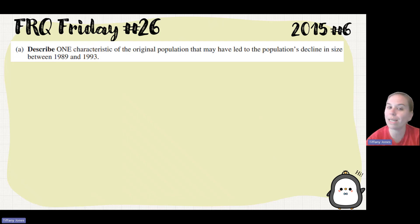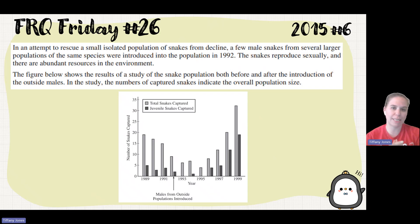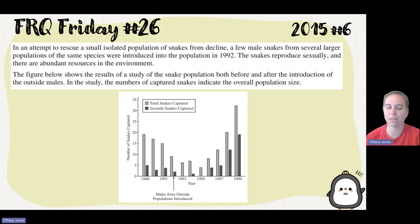Part A asked me to describe one characteristic of the original population that may have led to population decline in size between 1989 and 1993. The fact that this is a small, isolated population screams genetic drift to me. There would be either a small group of those snakes that got isolated and separated from the rest of the population, which would be founder's effect, or we had some natural disaster that drastically decreased the population size, which would be bottleneck.